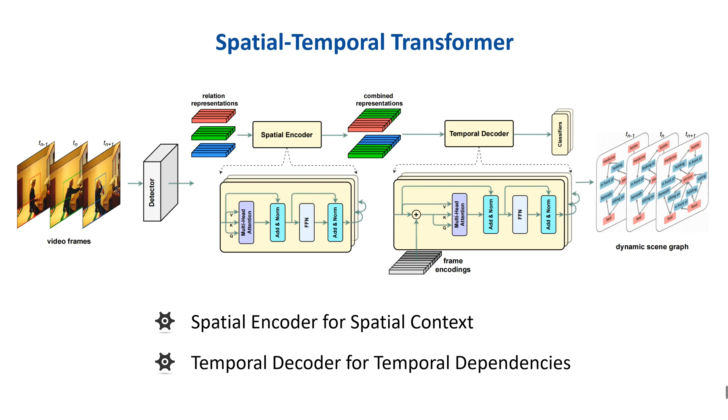And the temporal decoder which takes the output of the spatial encoder as input in order to capture the temporal dependencies between frames. Different from the original transformer, the self-attention layer of our temporal decoder is identical to the spatial encoder.